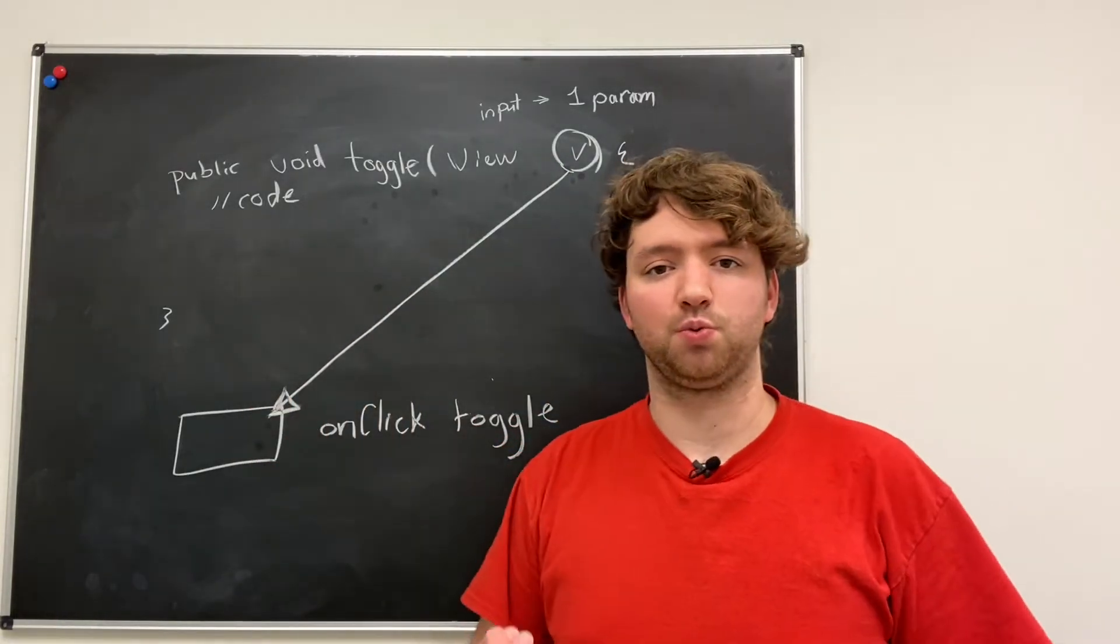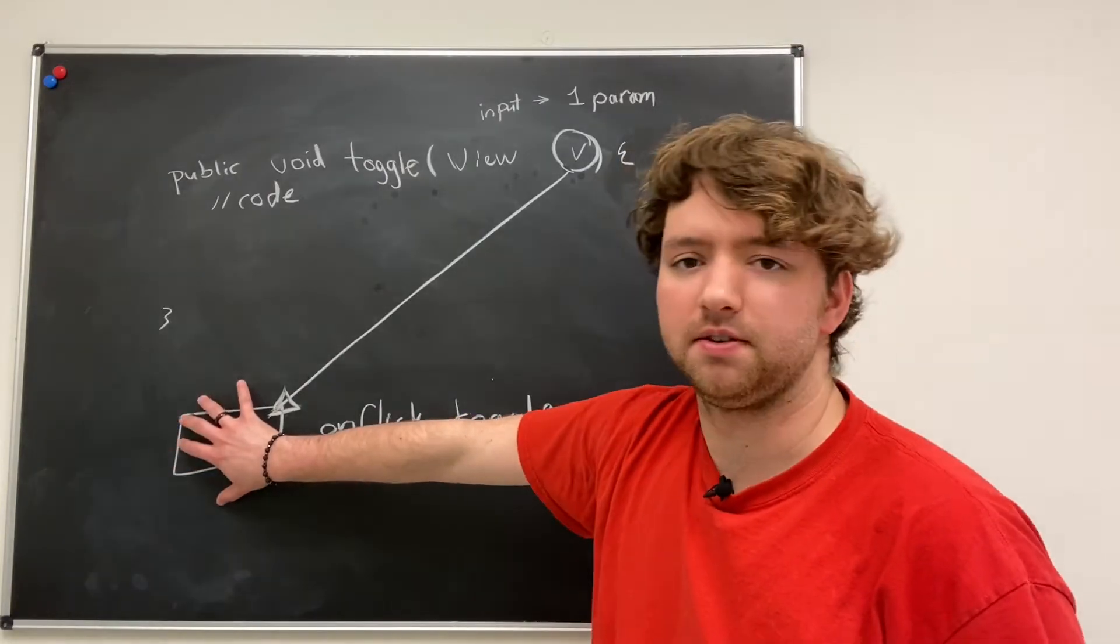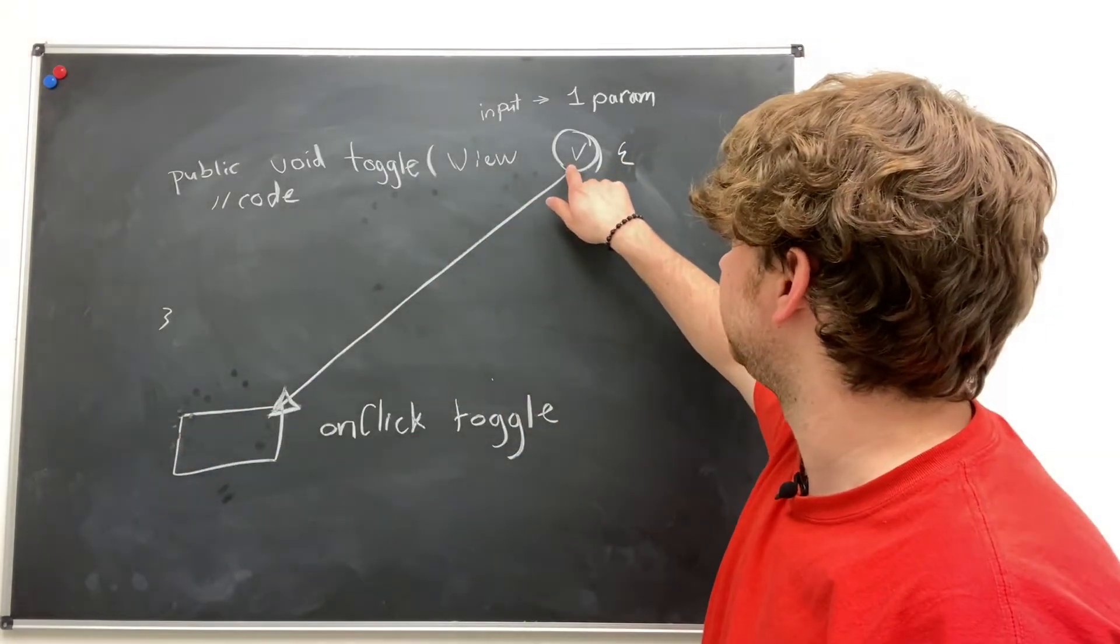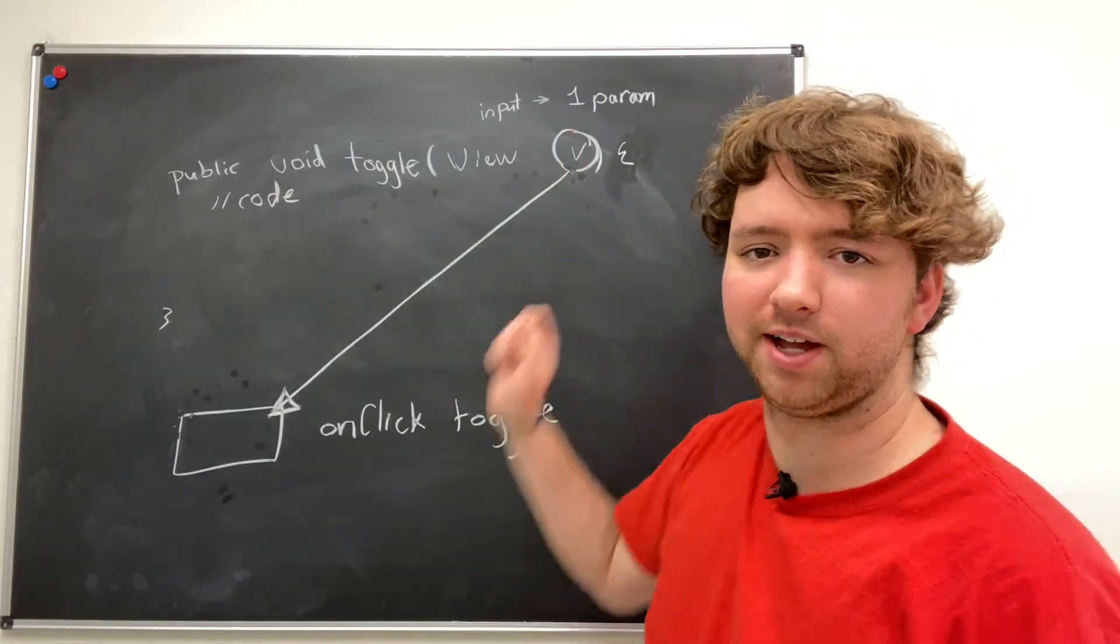Now, how does this work? Because this is a visual thing. It's a button. This is just a letter. How's that work?